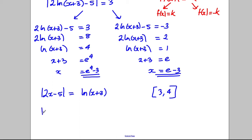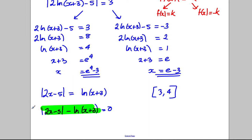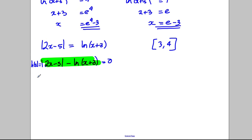What we do is make one side equal zero. So: |2x − 5| − ln(x + 3) = 0, and we call this H(x). To show it has a root, we evaluate H at 3 and H at 4 — if we get a positive and a negative, a change of sign, then the function has a root in between.